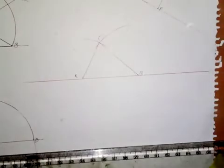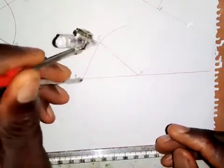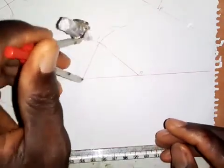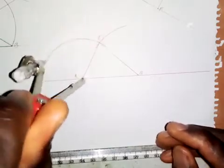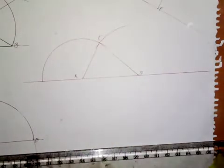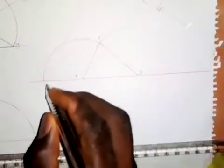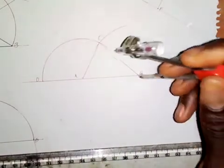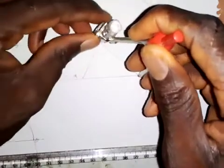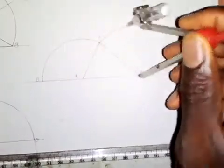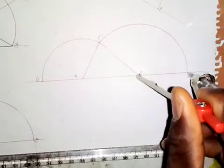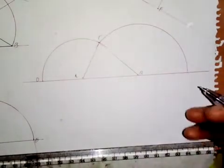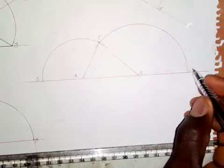Next, I will take my compass, put the pinpoint at A and extend it to C, and draw an arc. This arc touches the line AB extended at a point — I will call this point D. Then I will put the pinpoint at B, extend it to C, and draw another arc. This arc touches AB extended at another point — I will call this point E.